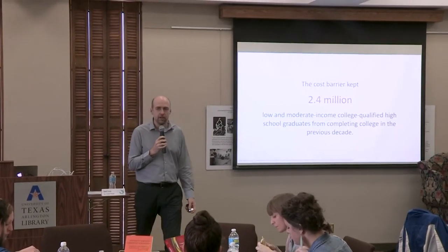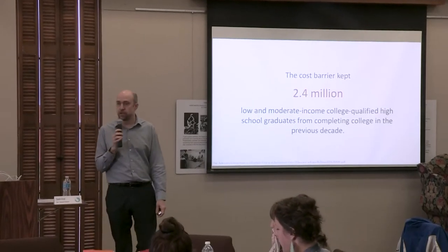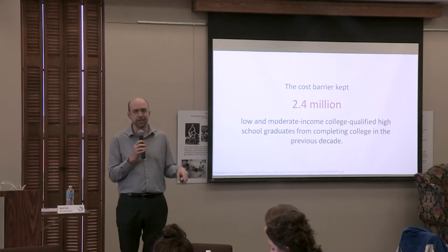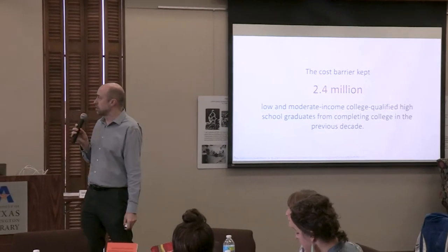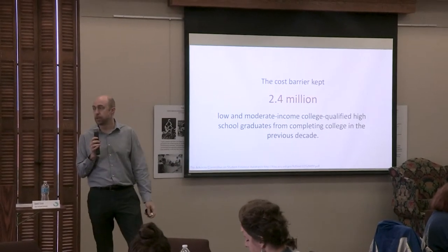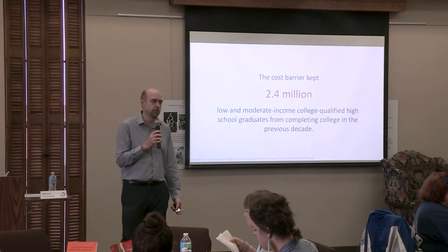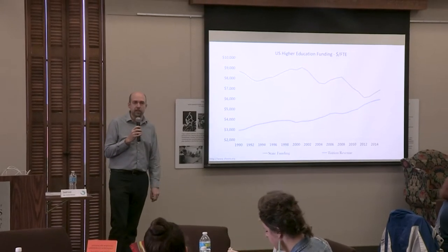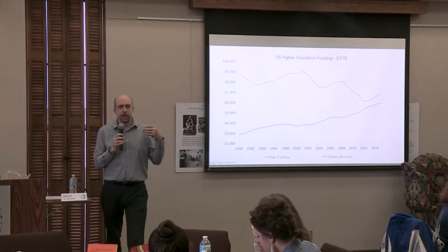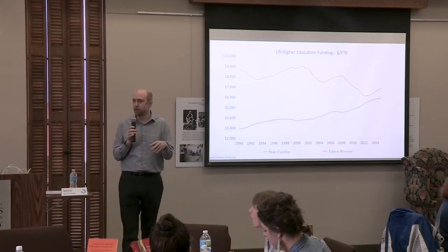This is a study done for the U.S. Department of Education showing that in about the first decade or so of this century, there were about 2.4 million students who did not complete college because of cost. There were a lot more students who didn't complete college, but 2.4 million were attributed to cost and cost alone. These are college-qualified students — they did all the right things, took the right classes in high school, they were qualified to go to college, but because of cost, they didn't graduate. We're going to spend about 20 minutes defining the problem before we talk about open textbooks.